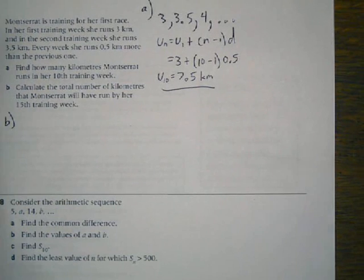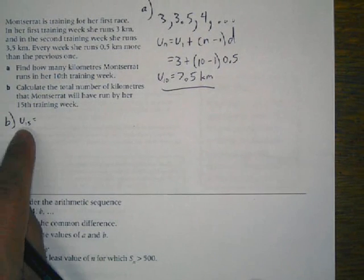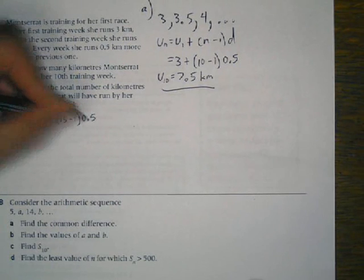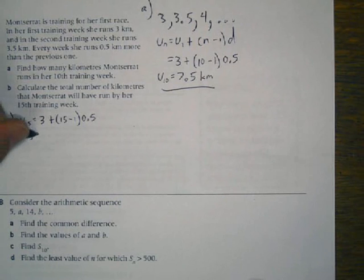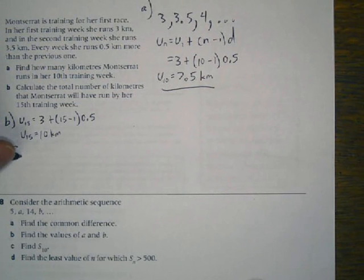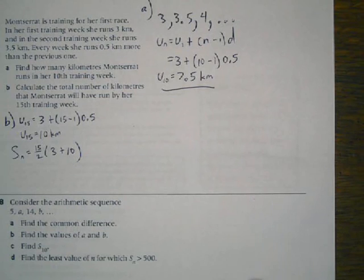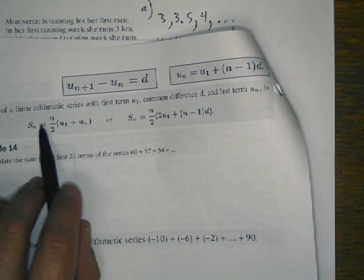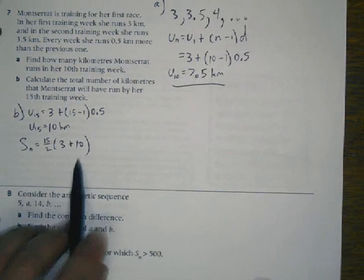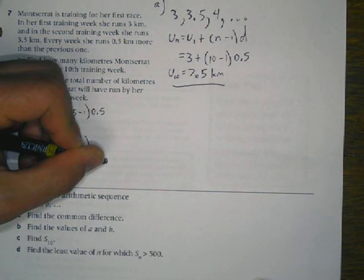Question B: calculate the total kilometers Montserrat will have run by the fifteenth week. First we find what the fifteenth week would be: 3 plus 15 minus 1 times 0.5, and by the fifteenth week she'll have run 10 kilometers. Now I find the sum: 15 over 2 times 3 plus 10. Using this formula where I know the first and last terms and n equals 15, the last term is 10, so we have 7.5 times 13, which equals 97.5 kilometers.